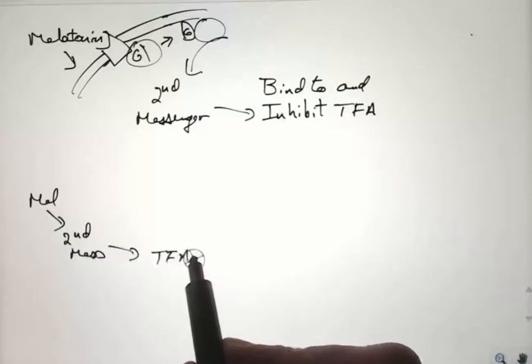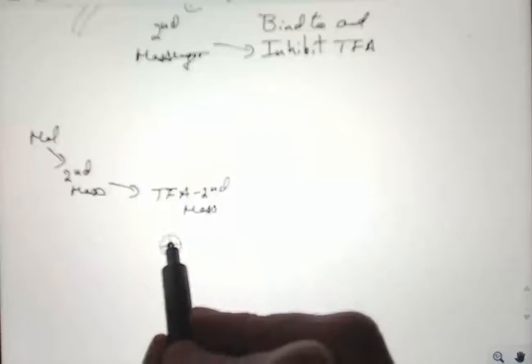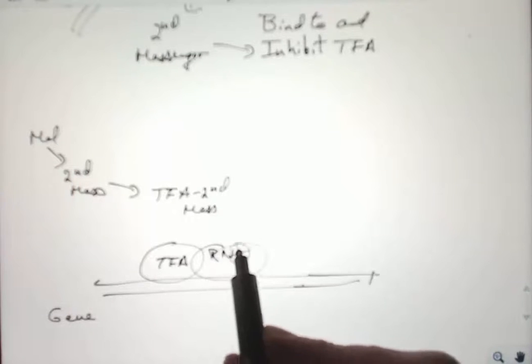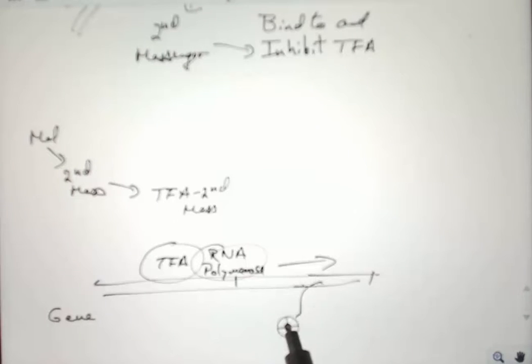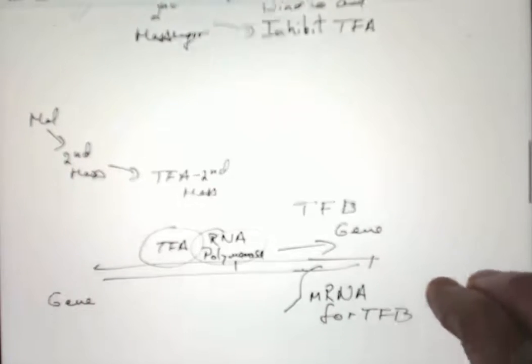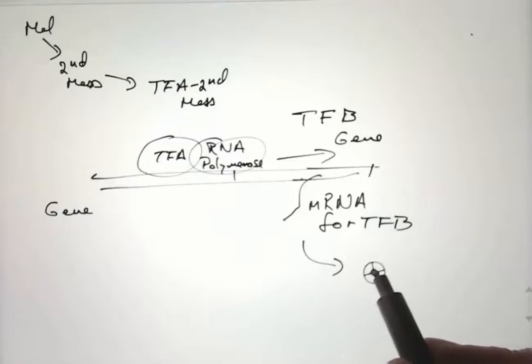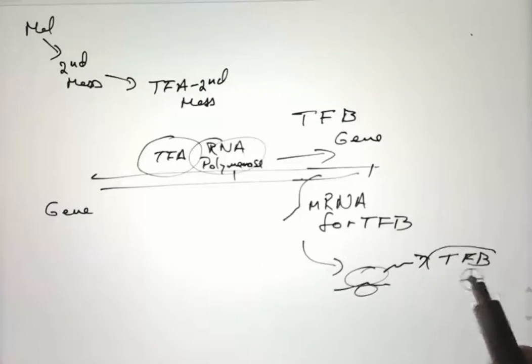Here's melatonin, second messenger, transcription factor A bound to that second messenger. Let's imagine normally transcription factor A binds to the gene for transcription factor B. Here's RNA polymerase. That causes transcription. Here's messenger RNA being produced for transcription factor B. And this is, of course, the transcription factor B gene.